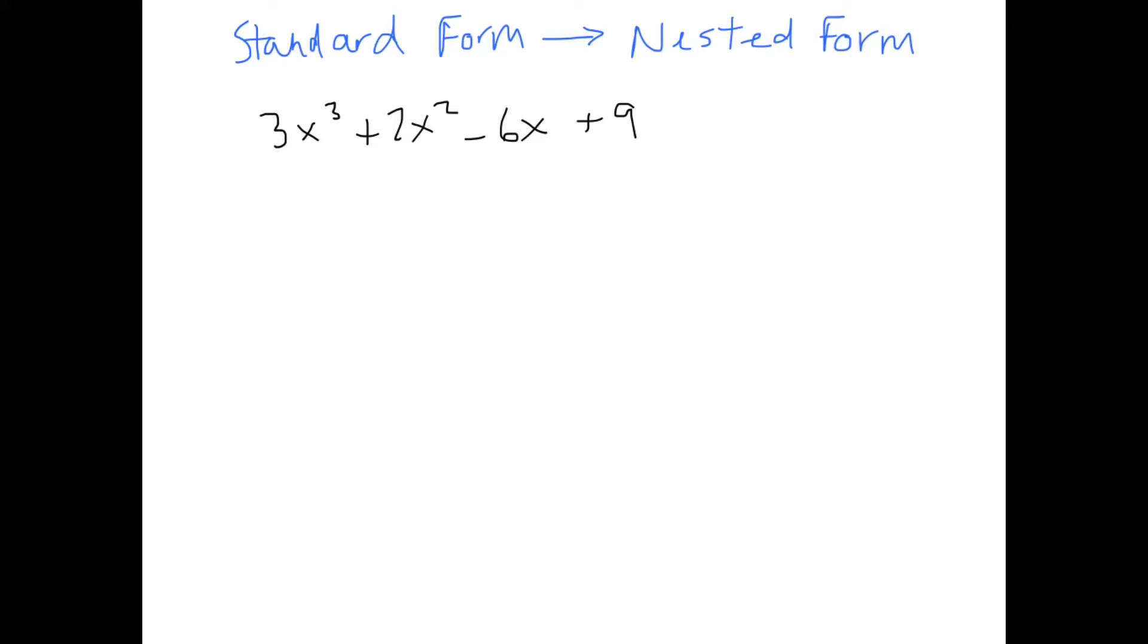The first general polynomial we want to look at is 3x cubed plus 2x squared minus 6x plus 9. So this polynomial right now is written in standard form, and we want to write it in nested form. If we take a look at these three terms, all of them have an x in common, so we can factor out an x. We can rewrite that as 3x squared plus 2x minus 6, all multiplied by x, and we still have the plus 9.